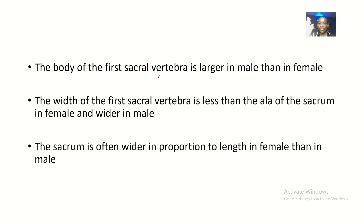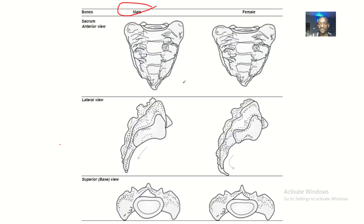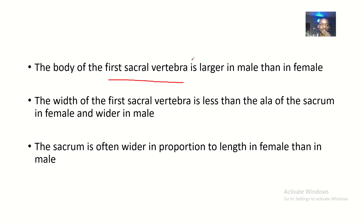The body of the first sacral vertebra is larger in males than in females. The width of the first sacral vertebra is less in females and wider in males. So it's the same point — the first sacral vertebra is larger in males than in females.